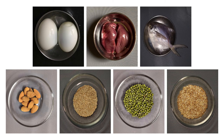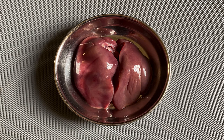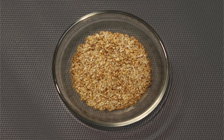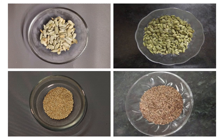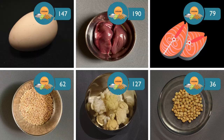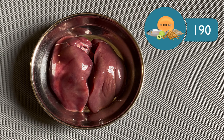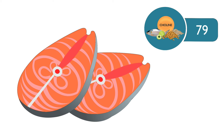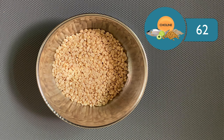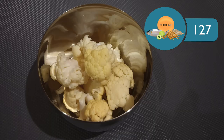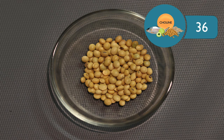Let us look at the food sources of choline and the amount present in a few food items. One egg has around 147 mg. 100 grams of chicken liver has approximately 190 mg. 100 grams of salmon has nearly 79 mg. 30 grams of raw split black gram has around 62 mg. 100 grams of cauliflower has 127 mg, and 30 grams of soya bean has 36 mg.